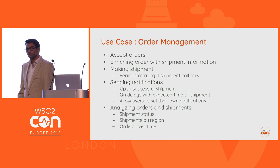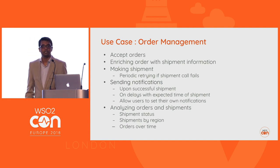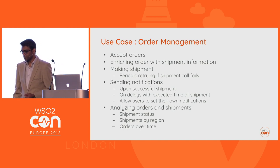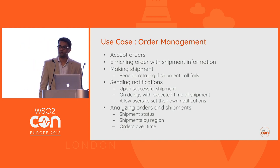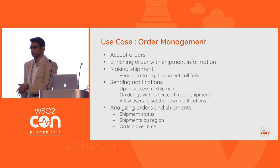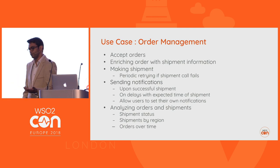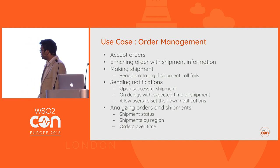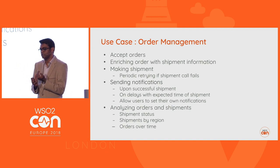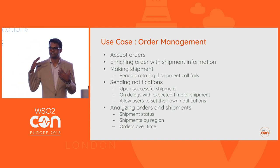On delays, you have to tell the customer when you can basically do the shipment. You also want to allow users to modify their notifications — like wanting to get a notification if somebody sent a shipment. There may be administrators who want to change the notification behavior. Then we also need to be able to analyze orders and shipments by shipment status, shipment by region, and orders over time.